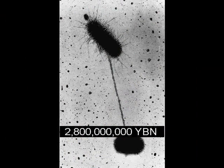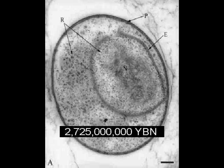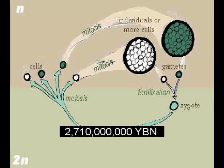Gender and sex conjugation evolve in bacteria. Cells can eat other cells. Eukaryotic cell — the first cell with a nucleus. The first protist. The nucleus may be a captured bacterium, virus, or plasmid, or grows from the cell membrane. Eukaryote sex evolves.